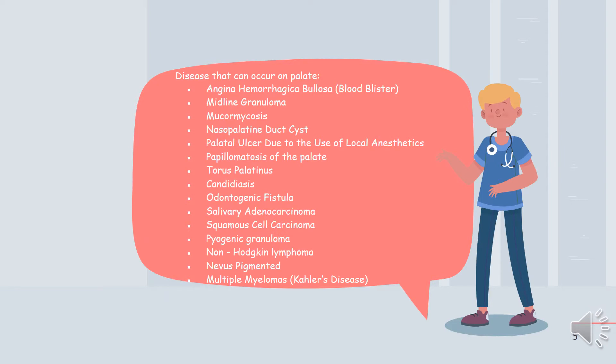There are some diseases that can occur on the palate: angina hemorrhagica bullosa (blood blister), midline granuloma, mucormycosis, nasopalatine dark cyst, palatal ulcer due to use of local anesthetics, papillomatosis of the palate, torus palatinus, candidiasis, odontogenic fistula, salivary adenocarcinoma, squamous cell carcinoma, pyogenic granuloma, non-Hodgkin's lymphoma, nevus pigmented (e.g., blue nevus), and multiple myelomas.